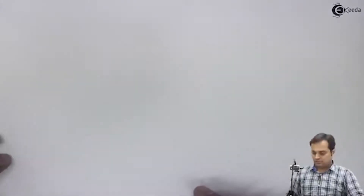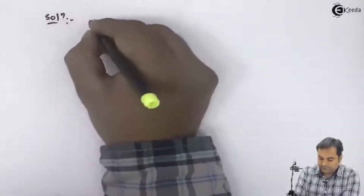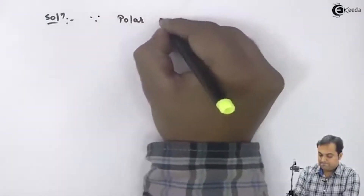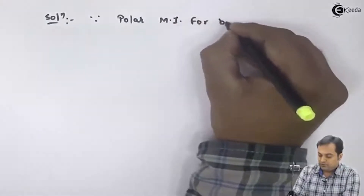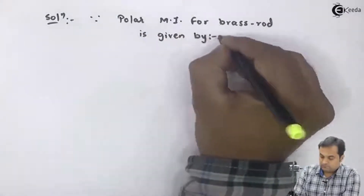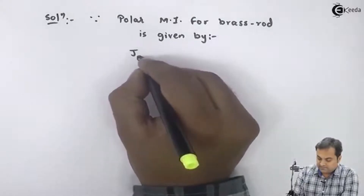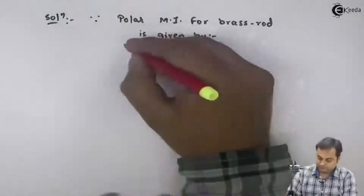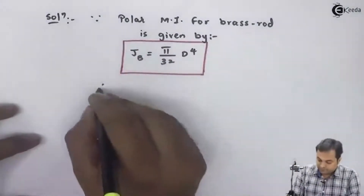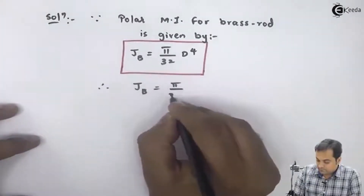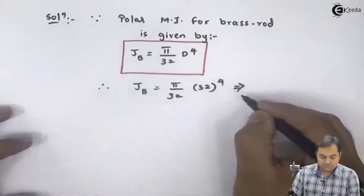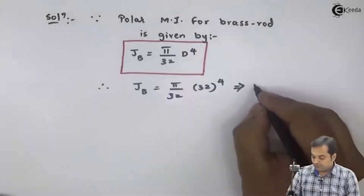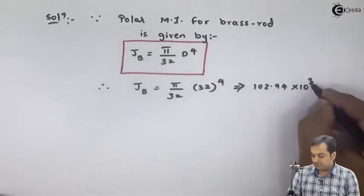Since dimensions of the steel tube and brass rod are given, I will first get the value of J, the polar moment of inertia. For the brass rod, since it is solid: J_b = π/32 × d⁴, where d = 32 mm. Therefore J_b = 102.94 × 10³ mm⁴.